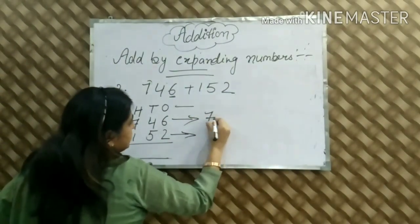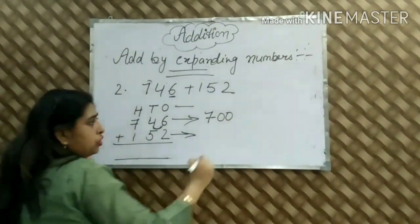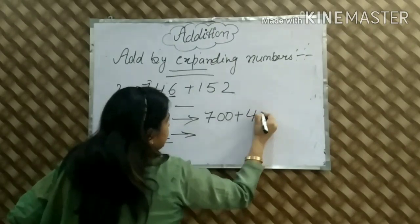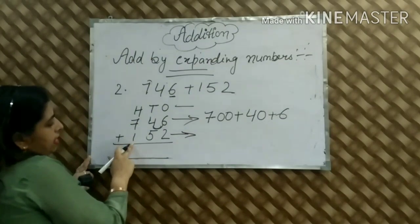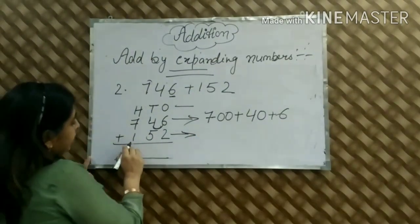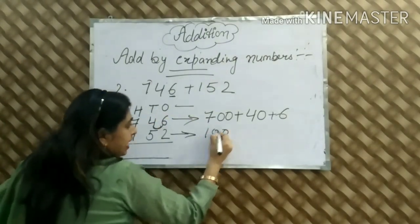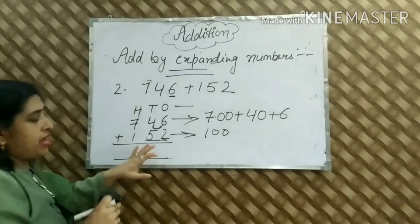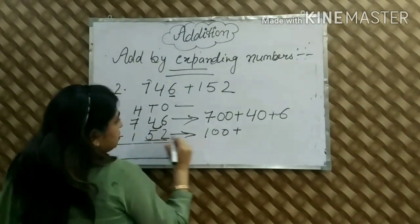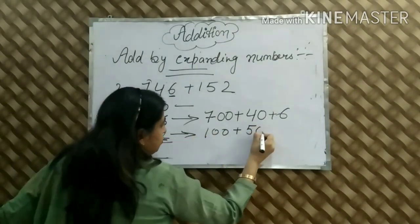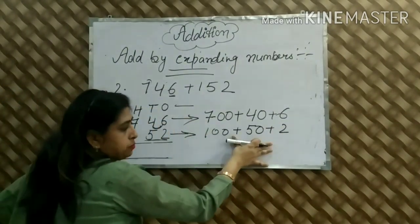Our first digit is 7. After 7, there are 2 digits, so we write 700. After 4, there is only 1 digit, so we write 40. The last number is 6. Now for 152 in expanded form: 1 is in the hundreds place, so we write 100. After 1 there are 2 digits. Next we have 5 — after 5 there is only 1 digit, so we write 50. And the last number is 2. This is how we write 152 in expanded form.